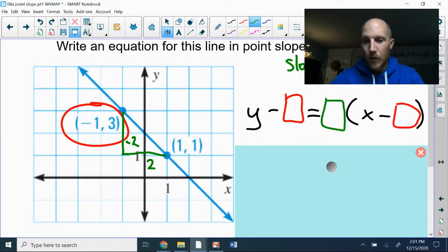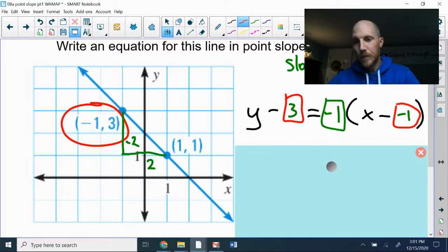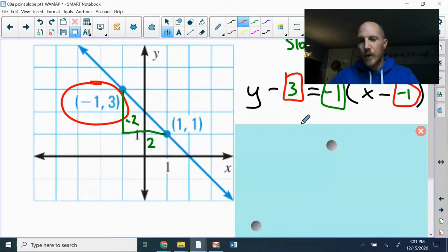I'm going to put that slope into the slope box of my equation, then put the x-coordinate from this point we chose, the negative 1, into my x box, and the y-coordinate of 3 into the y box. Final answer. We can clean it up, but this is the final answer.